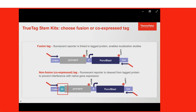It's important to note that the intensity of any tag is always dependent on the endogenous expression level — weak native expression means a weak fluorescent signal. Another unique feature of the TrueTag stem kits is the option to choose a fusion or non-fusion tag, using a template with a 2A cleavable linker so the fluorophore is not directly fused to the target protein. This is useful when there are concerns the tag might interfere with target protein expression or folding. Both templates are provided in the stem kits, so you don't have to make that decision right away.